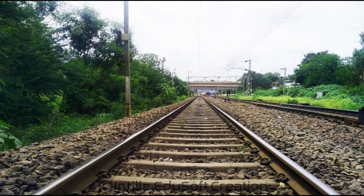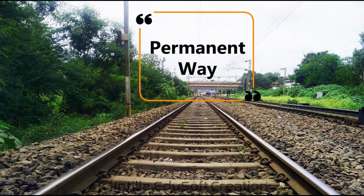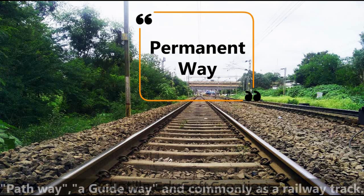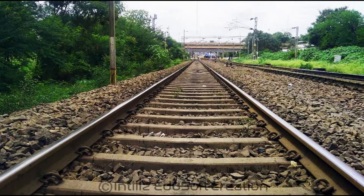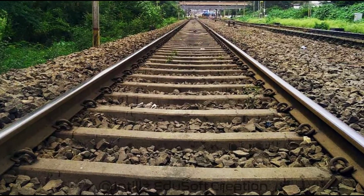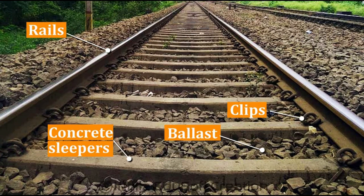To run a train, a dedicated path is required. This dedicated path is called a permanent way, or pathway, or guideway, but commonly known as a railway track. The railway track consists of different components.